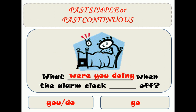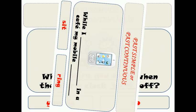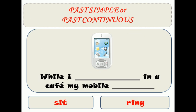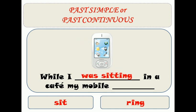When the alarm clock went off, what were you doing? So at that moment, what were you doing when the alarm went off? Now, 'while': while I was sitting in a cafe, my mobile rang. This is a long action — I was sitting — and the mobile rang.